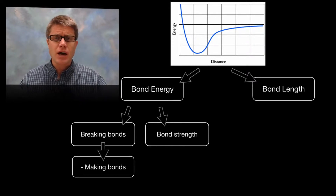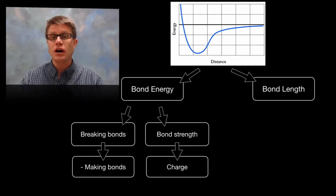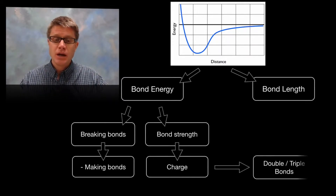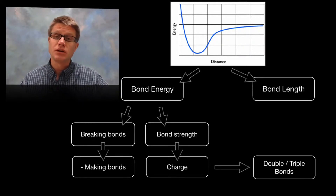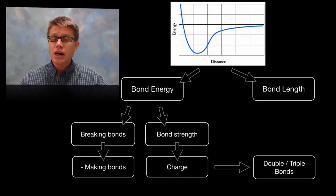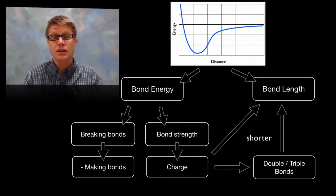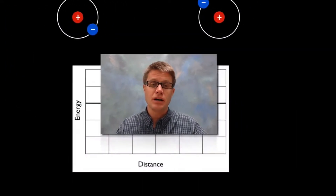The strength of that bond, or the bond strength, is going to be built upon the charges of the atoms themselves. The bigger the charges are, the greater that bond energy is going to be. And as we increase the number of electrons in a bond — moving from a single to a double to a triple bond — we're actually increasing the charges, and therefore increasing that bond strength. As we increase that strength, we're going to pull those atoms together and actually decrease the bond length.